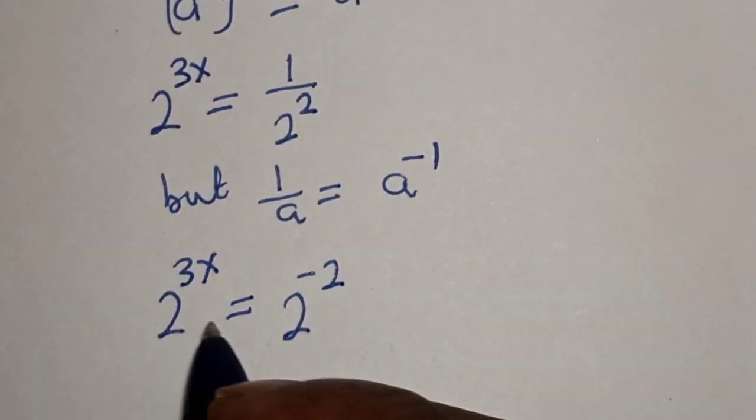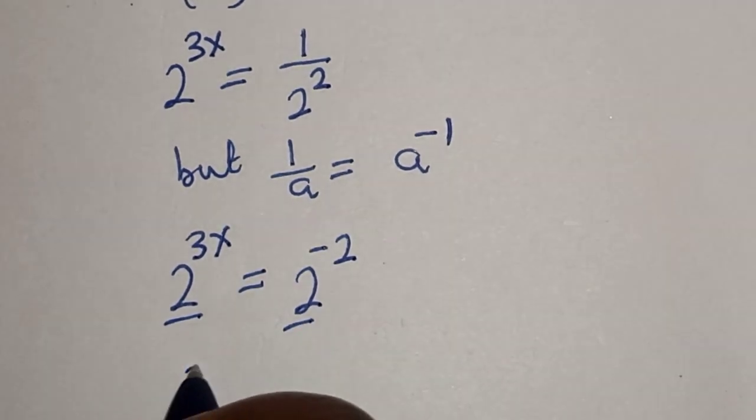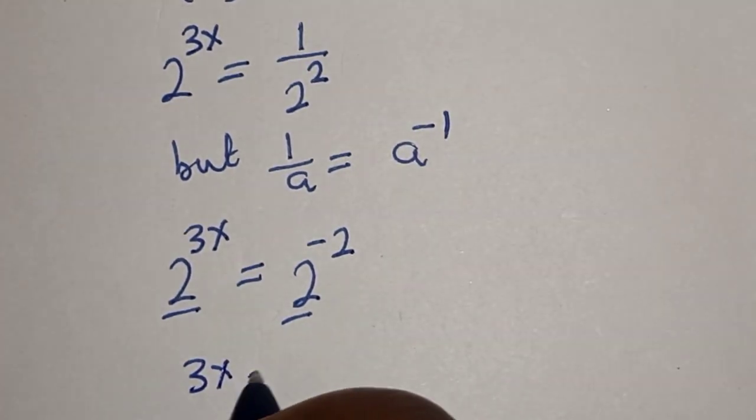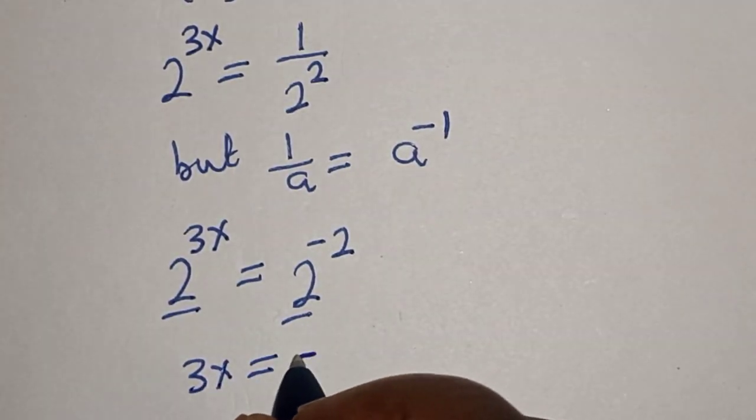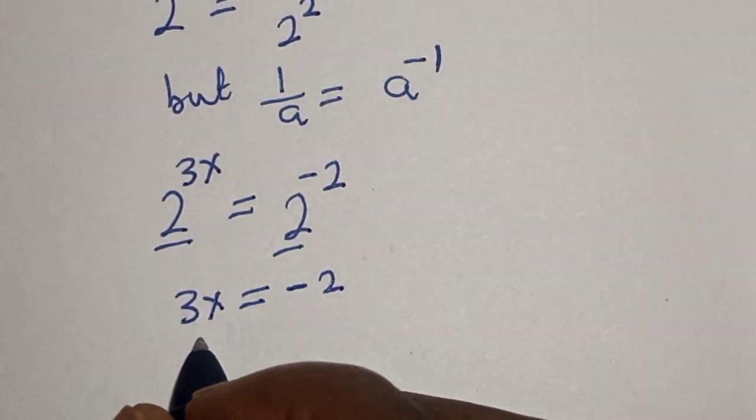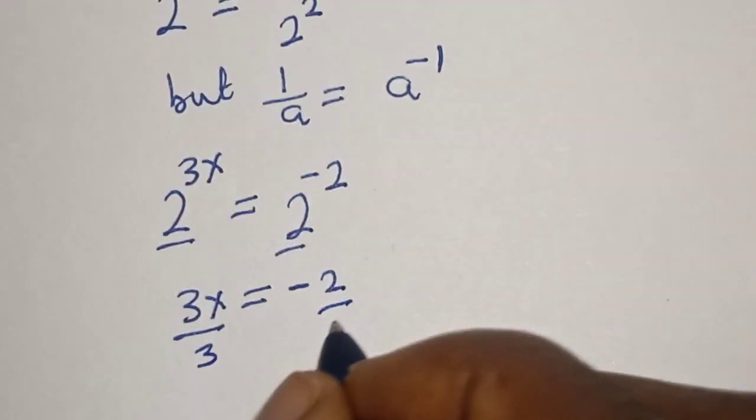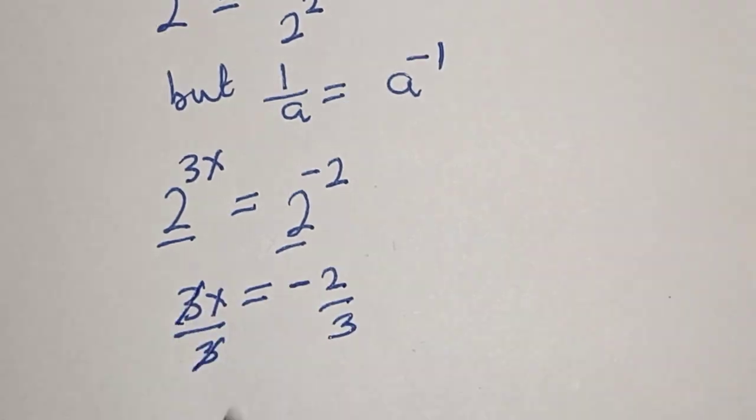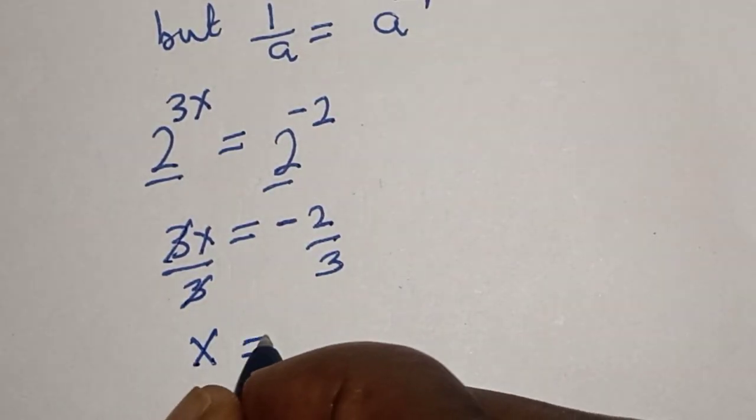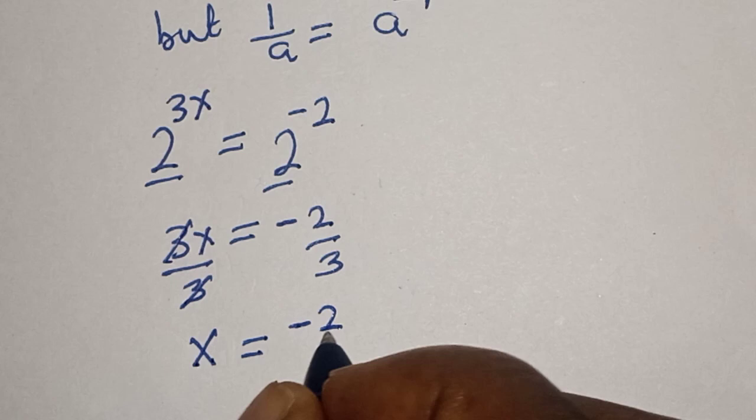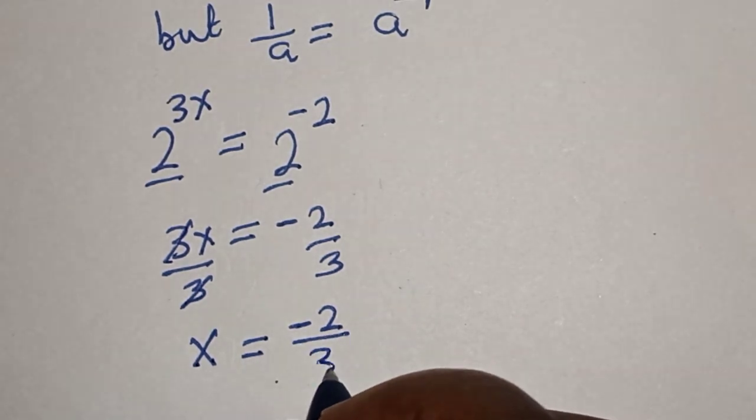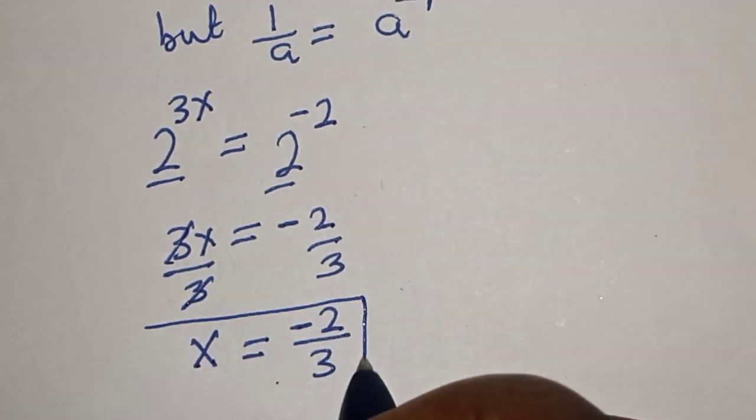They have the same base 2, so 3x equals minus 2. Let's divide both sides by 3. This cancels, and x equals minus 2 over 3. That is our final answer.